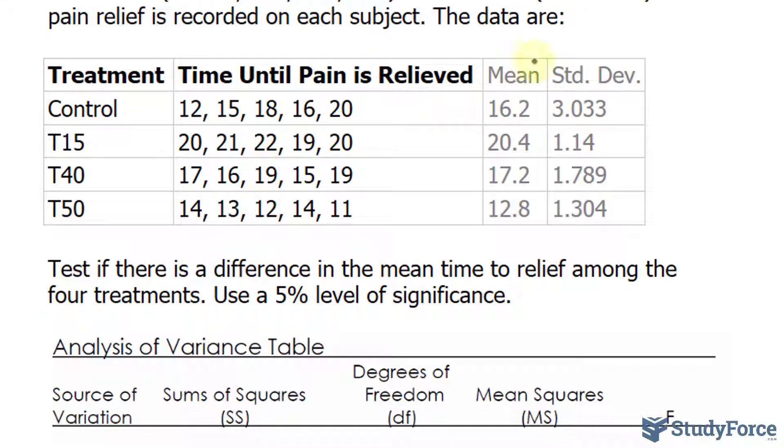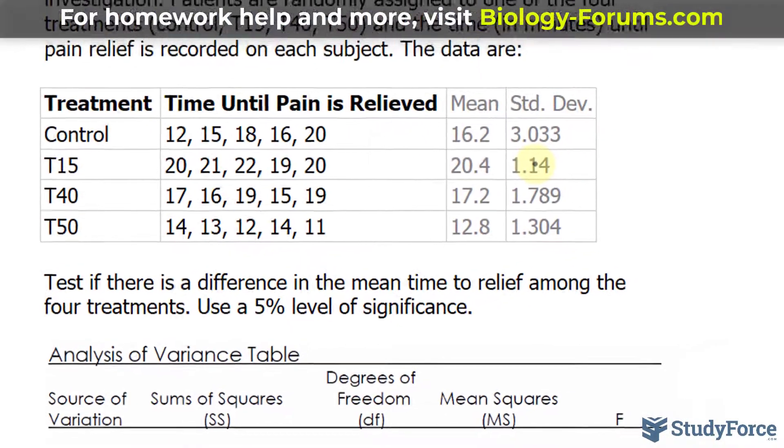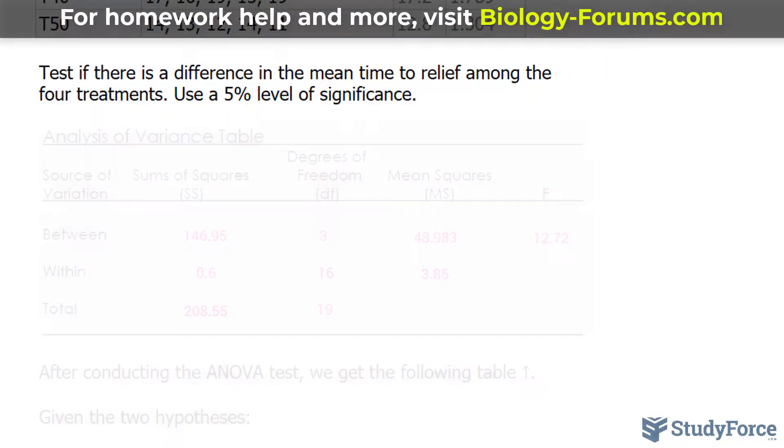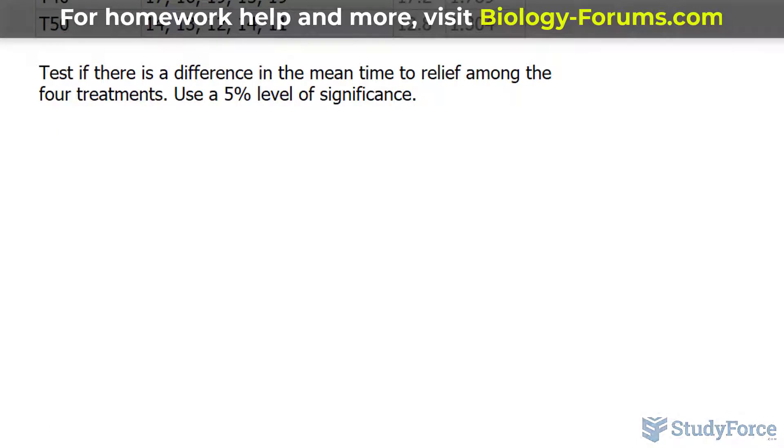In addition, I calculated the mean and standard deviation, which is typically needed for the ANOVA test and the Tukey procedure. Our question is: test if there is a difference in the mean time to relief among the four treatments. Use a 5% level of significance.